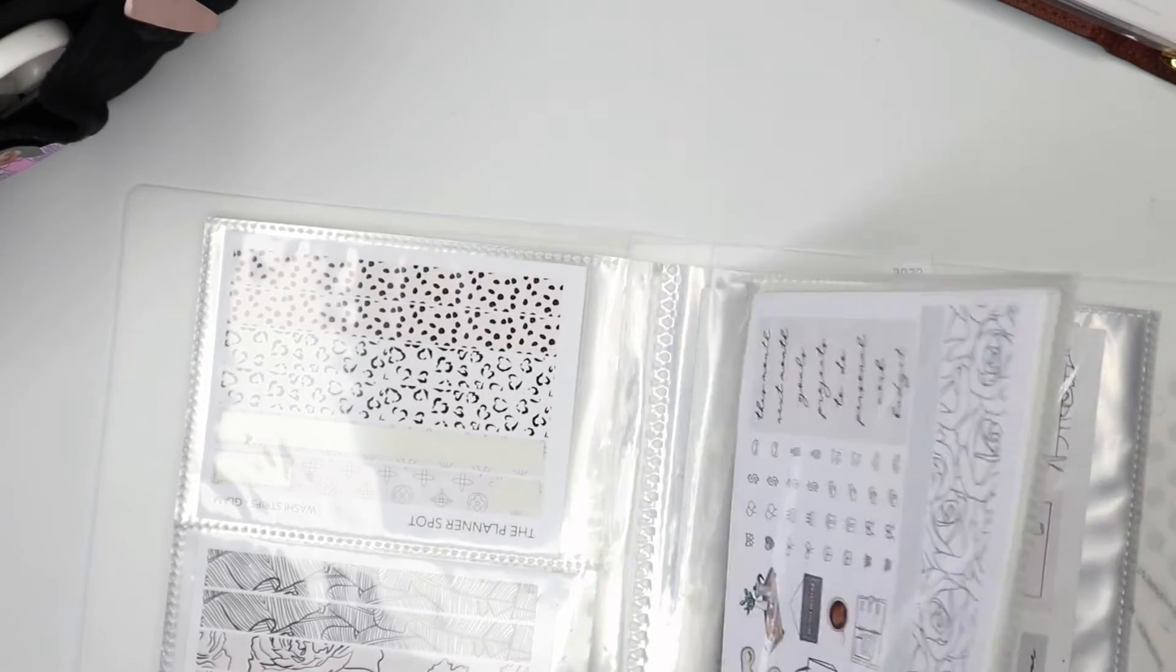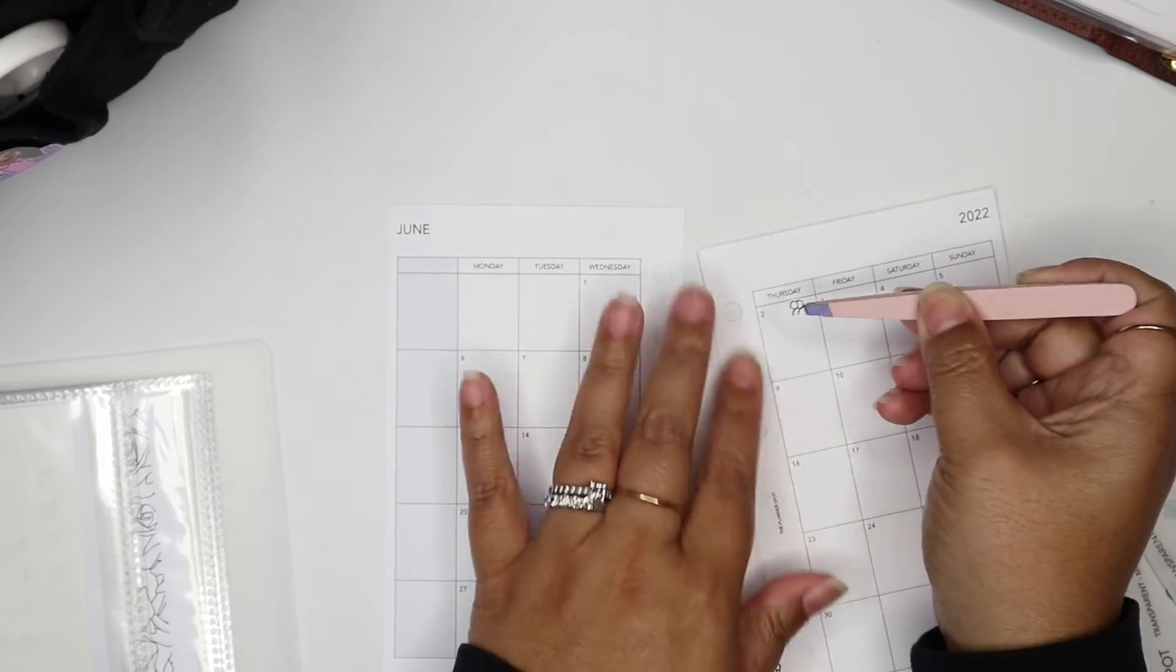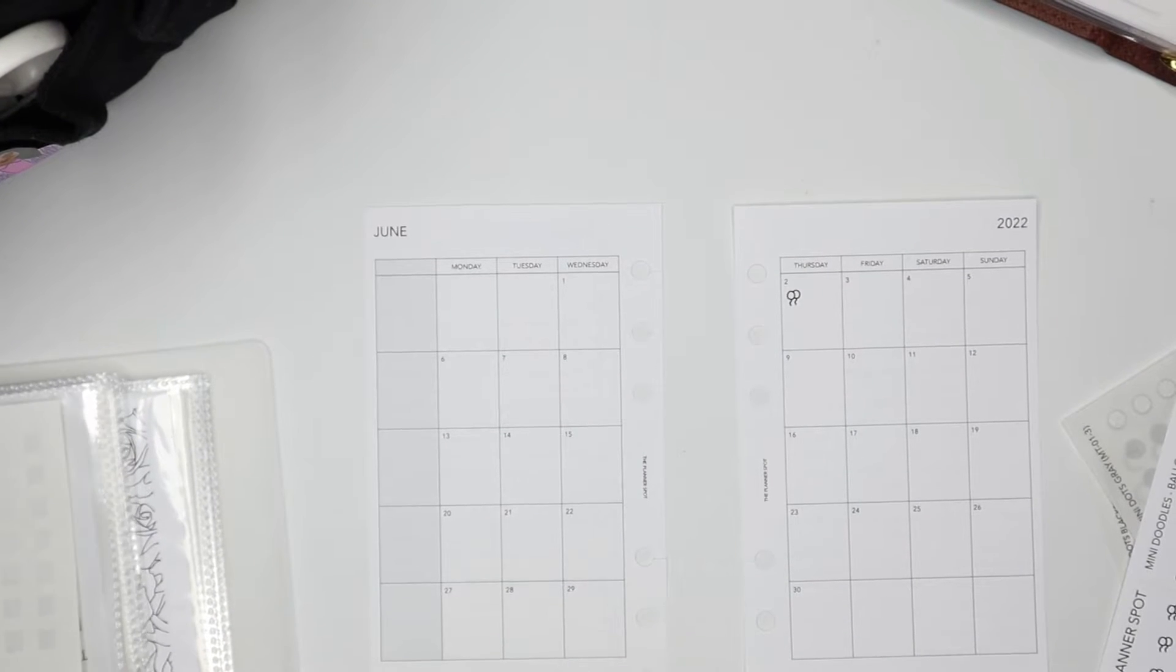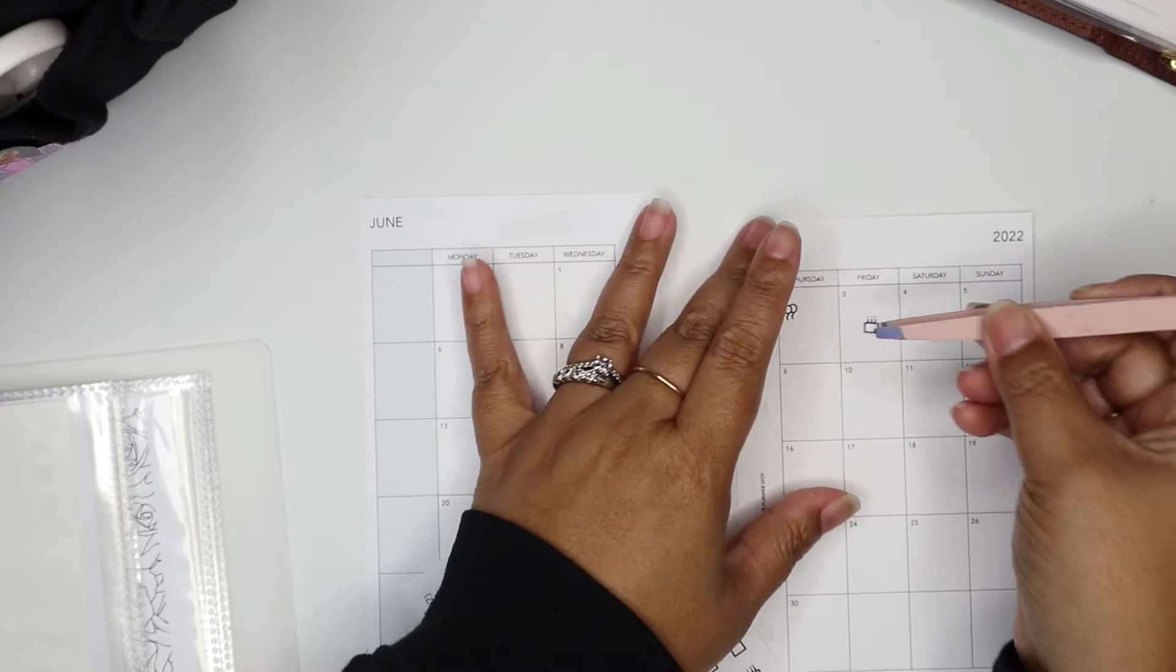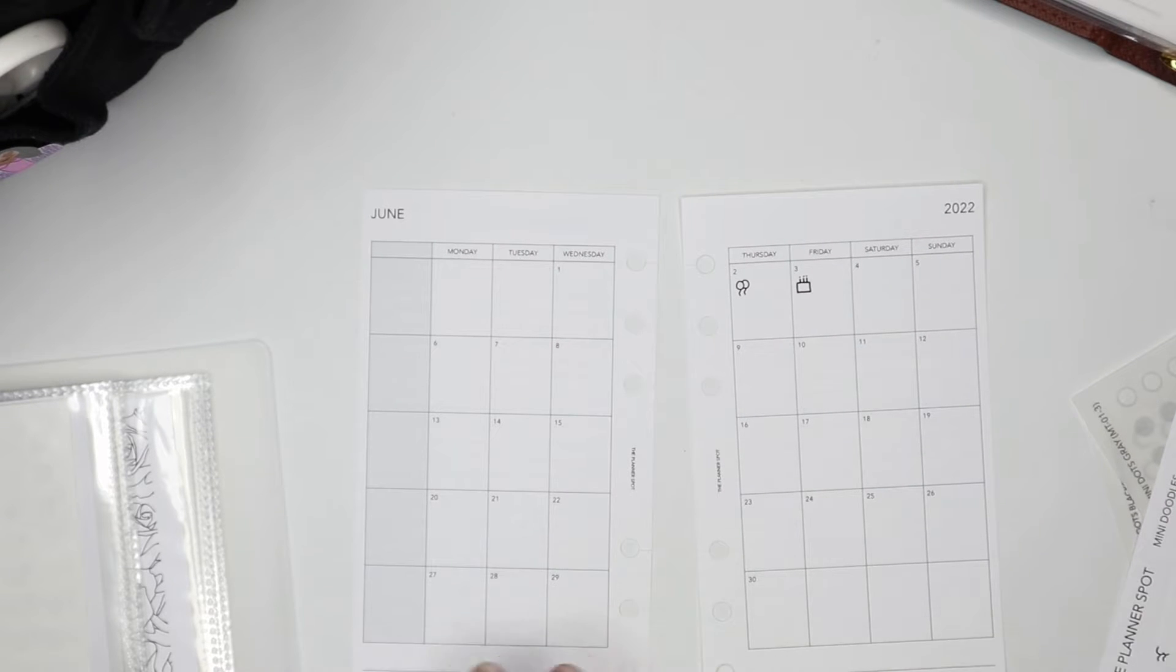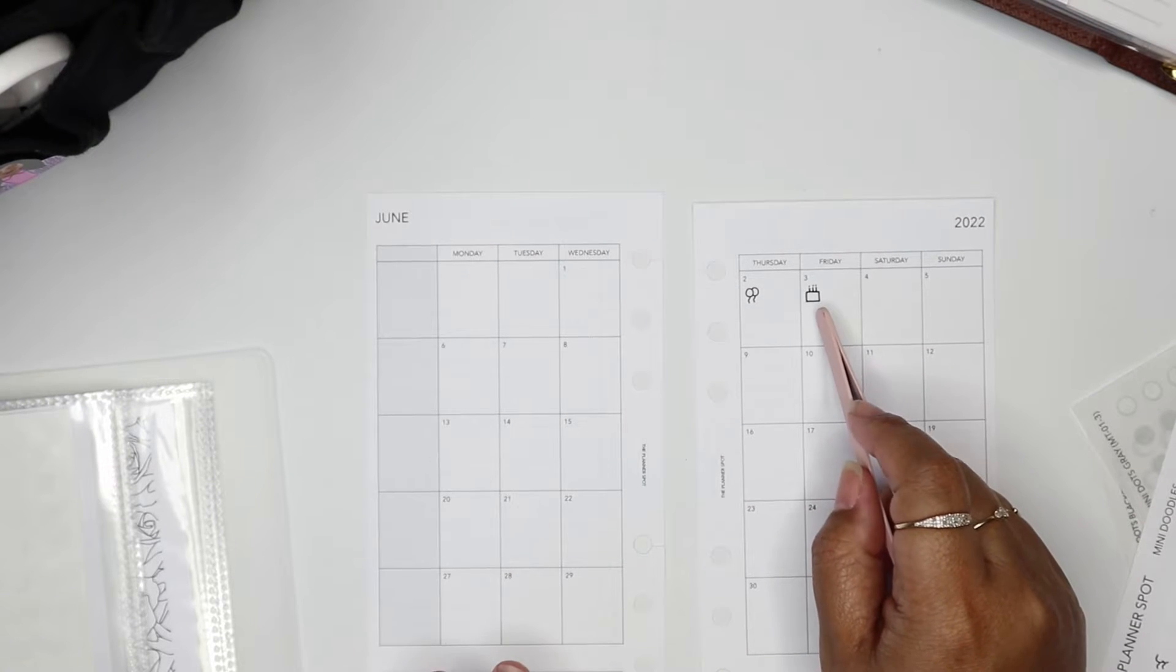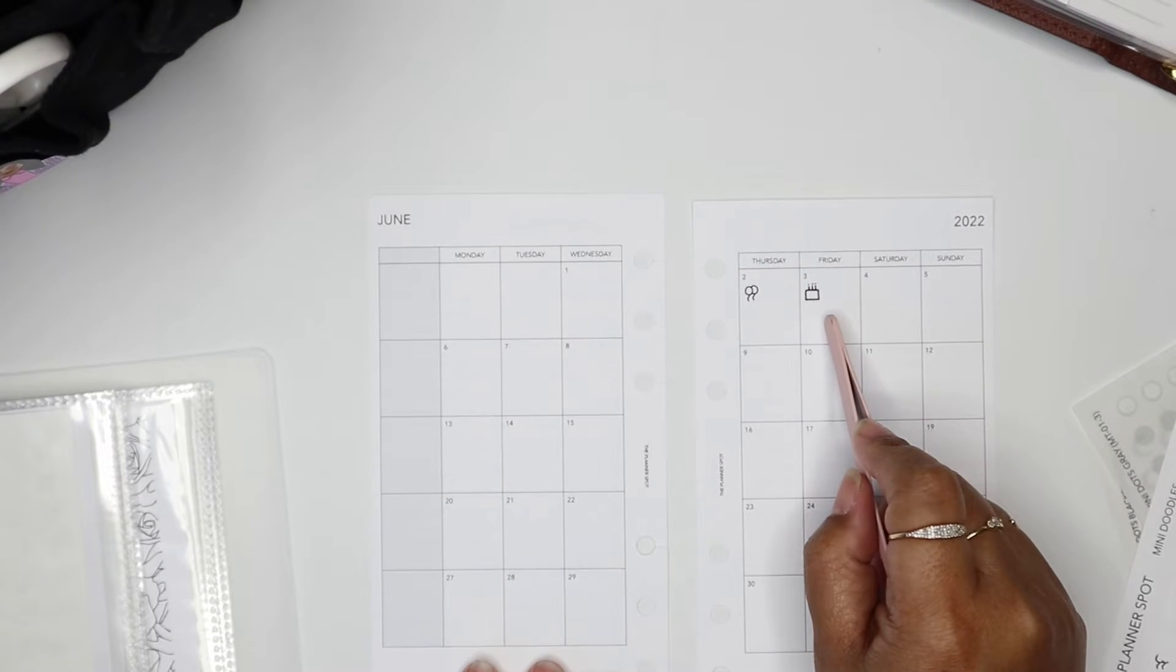So on June 2nd, my daughter is graduating from eighth grade, so I'll use balloons. And then on the third is my niece's birthday. I mentioned before in other videos that I don't put birthdays on my monthly spread. I mainly just put my husband's and my kids' birthdays, but I've been trying to get better at sending out cards and gifts. So I kind of need to do that ahead of time. So I started marking birthdays on my monthly spread now.